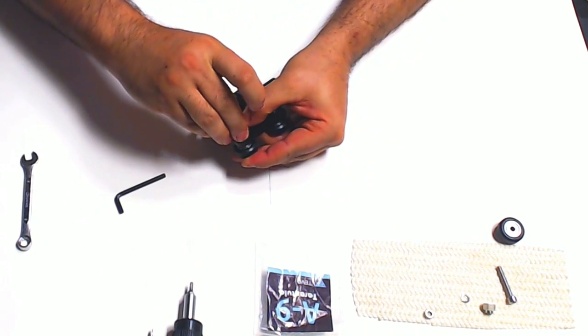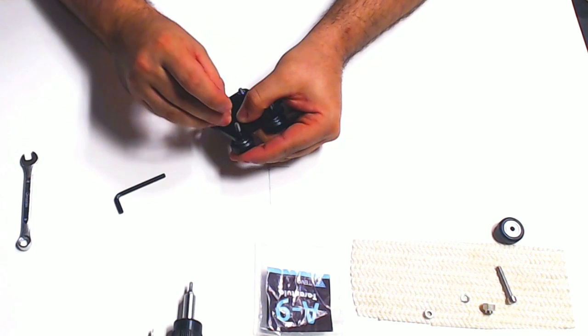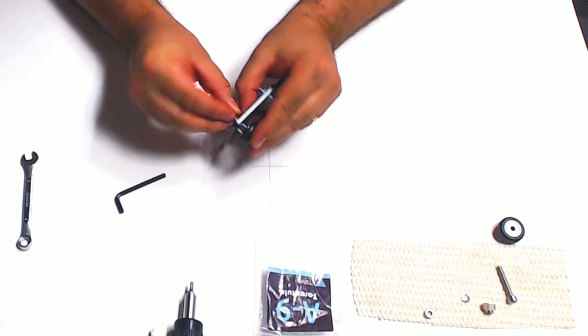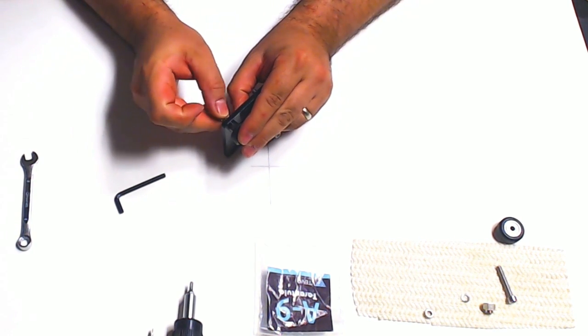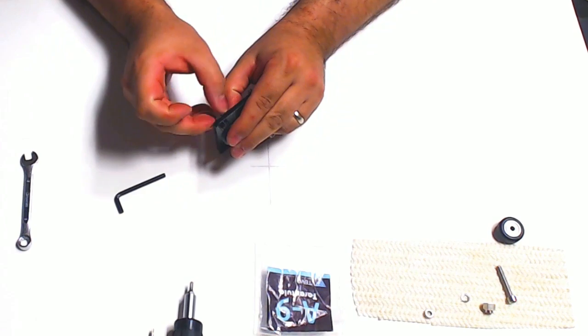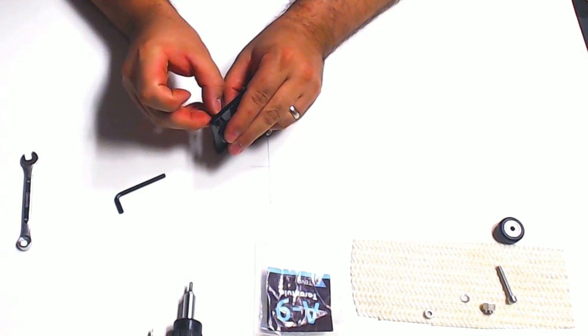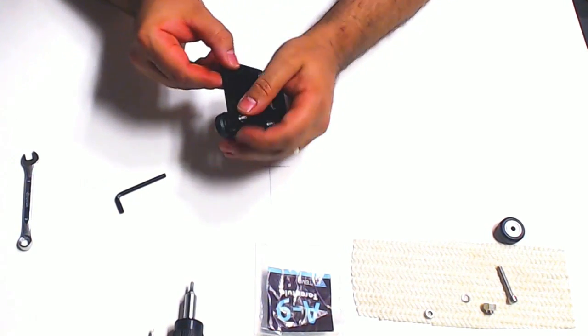Now, if you want to, you can, if you have some extra washers around, you can put some washers on the outside here. Because these holes are a little bit big for these nuts. So just be careful when you tighten these down that the nut doesn't fall into the hole.